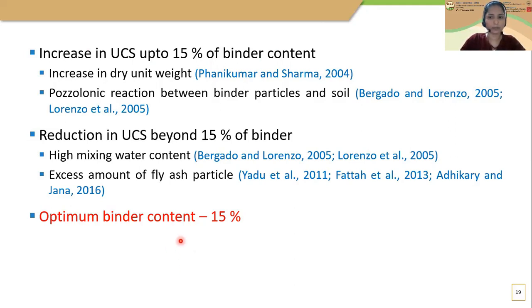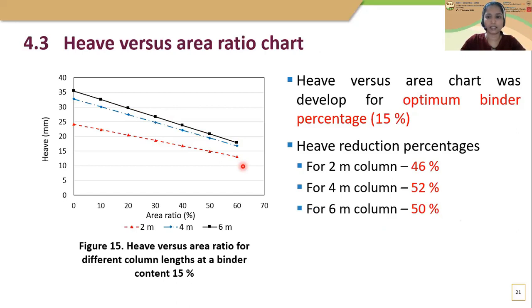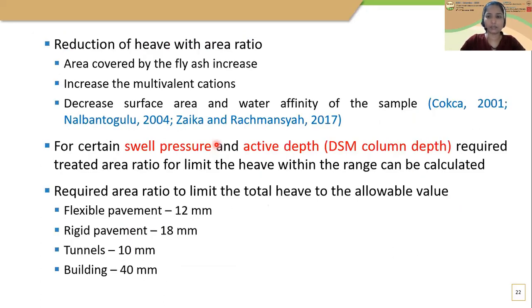According to the UCS results, optimum binder content was 15%. Regarding the effect of fly ash on swell pressure: swell pressure decreased with binder content, with a percentage reduction of about 53%. The reason is that fly ash provides multivalent cations which promote flocculation of clay particles by cation exchange, decreasing surface area and water affinity, and causing reduction in swell pressure. The maximum decrease in swell pressure was obtained at 25% fly ash content. Heave is further reduced with increasing area ratio because the area covered by the binder increases, providing more multivalent cations and reducing surface area and water affinity.